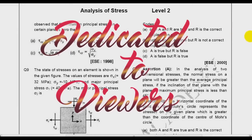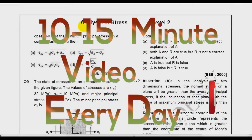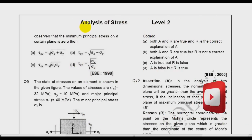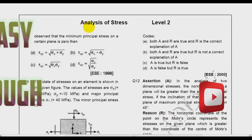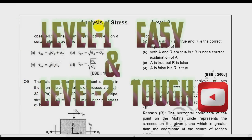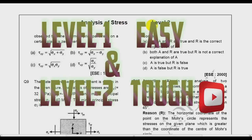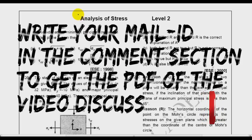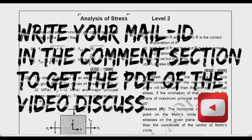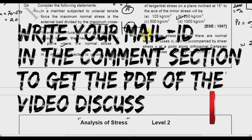Hello friends and welcome to RACON Civil Academy video series. In this video series we are giving you the solutions of questions that appeared in previous years of GATE and Engineering Services. We divide this into two parts: level 1, which is easy, and level 2, which is conceptual and sometimes time consuming. The topic is analysis of stress, which you call the Mohr circle. In the previous video I solved up to question number 7; today I will start from question number 8.